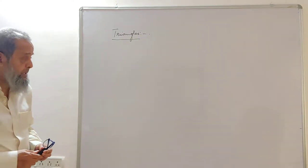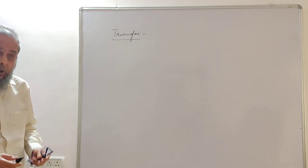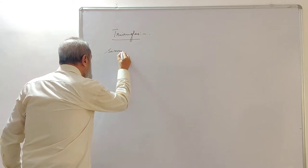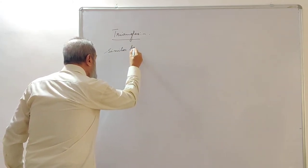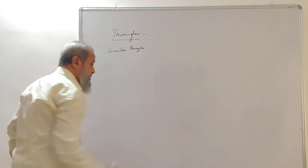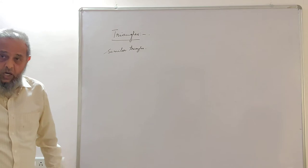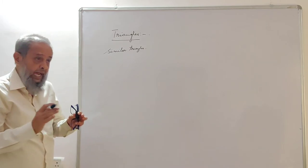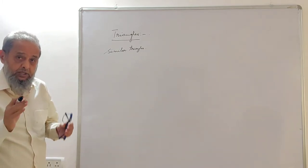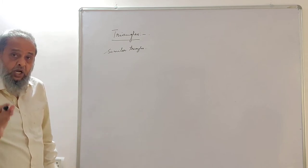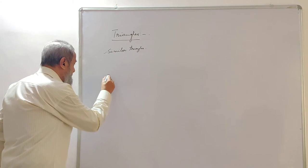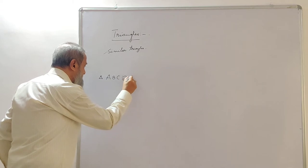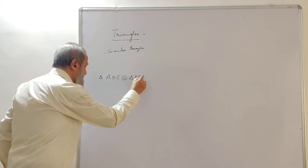After the Basic Proportionality Theorem, we have to know about similar triangles. You have already studied in 9th standard about congruent triangles. When two triangles have the same shape and the same size — both shape and size — then we say they are congruent. It is written as triangle ABC is congruent to triangle PQR.